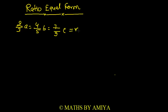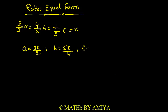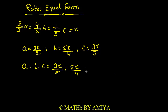In general, we take this equal expression as K. So what is A? A is nothing but 3K/2. What is B? B is nothing but 5K/4. And C is nothing but 9K/7. So the ratio of A to B to C is 3K/2 : 5K/4 : 9K/7. K cancels out as it is common everywhere.